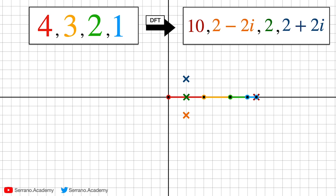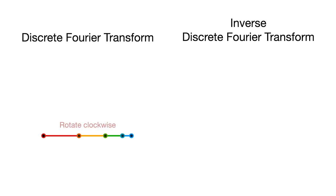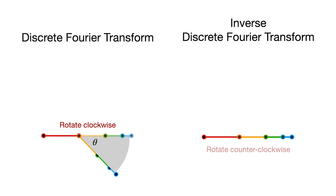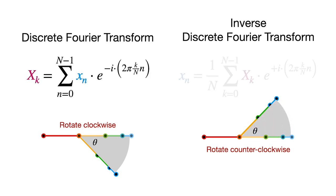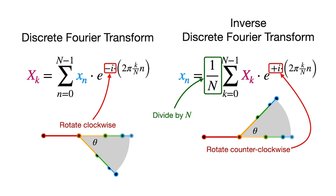Now that we have these four points, we look at them in order. This is the point 10, then 2 minus 2i — because we're looking at the complex plane, where 2 is the horizontal and minus 2 is the vertical, and i is the square root of minus 1 — then 2, and then 2 plus 2i. That is the discrete Fourier transform of 4, 3, 2, 1: it's 10, 2 minus 2i, 2, and 2 plus 2i. There's also the inverse discrete Fourier transform: if you rotate clockwise to get the DFT, you rotate counterclockwise to get the inverse DFT, and then divide by n.